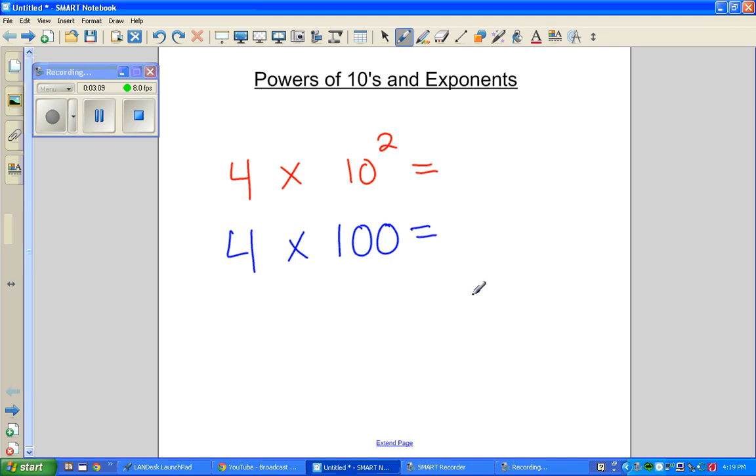Now, any number times a multiple of 10 is really easy because all you do is multiply 4 times 1, which is 4. And same thing. You just add how many zeros you have. It becomes 400.